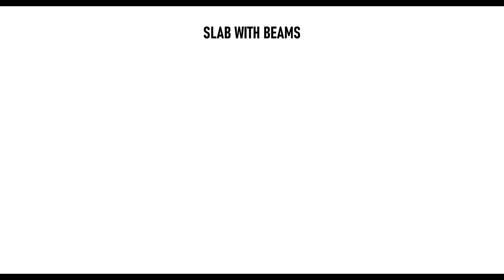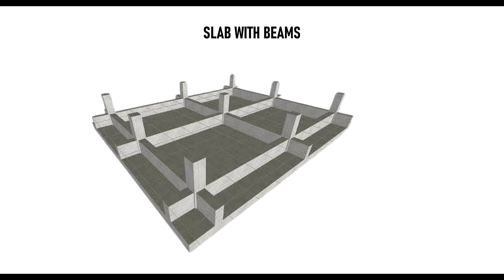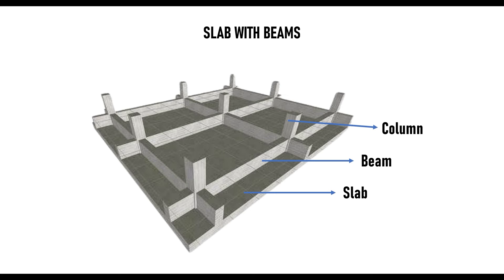The second type is the slab with beams, similar to the first but with beams added. The beams are not primarily taking the load — they act as stiffeners for the slab, reducing its required effective depth. The configuration has beam, column, and slab together. This type is used when the load is unevenly distributed amongst the columns, and for medium structures where the soil is very soft. In some cases with heavier loads and good soil conditions, it can also be provided.